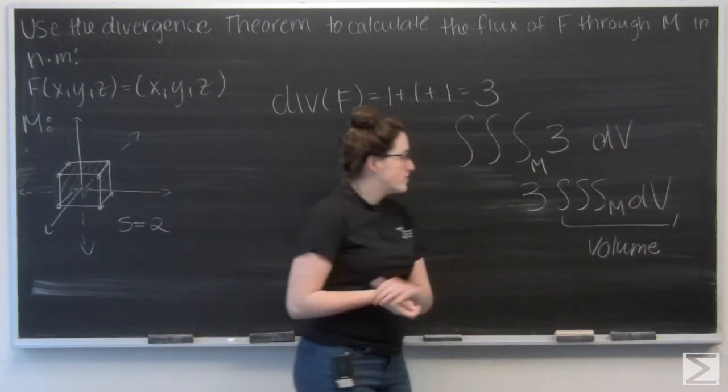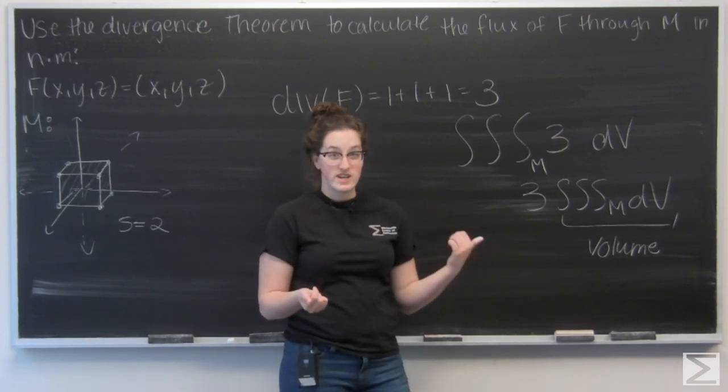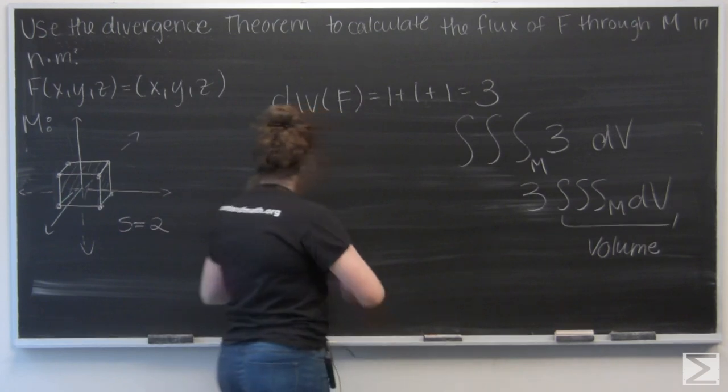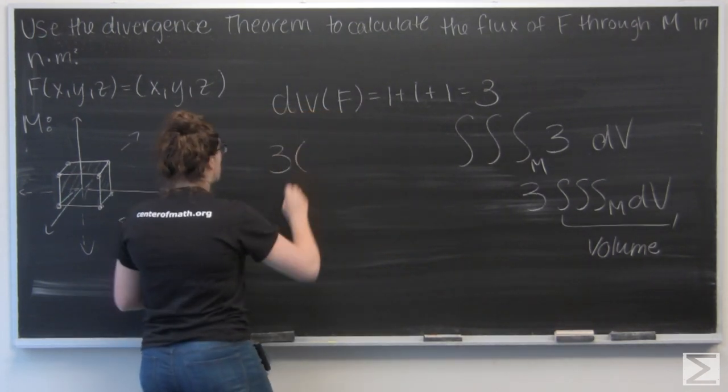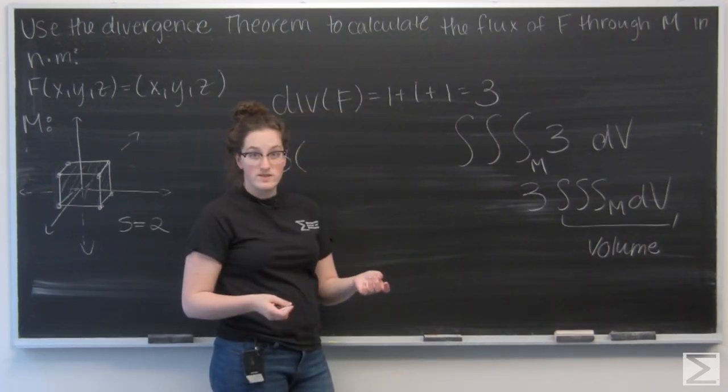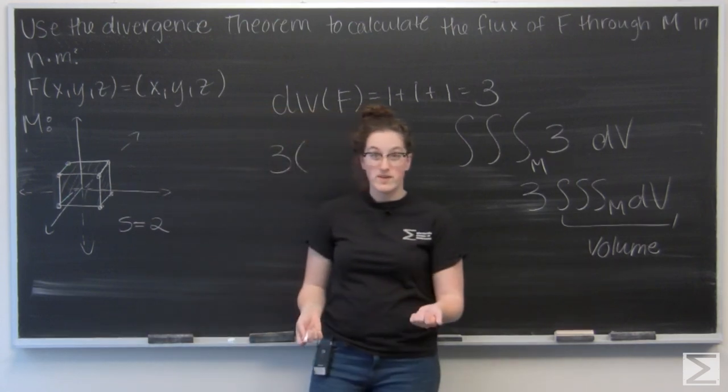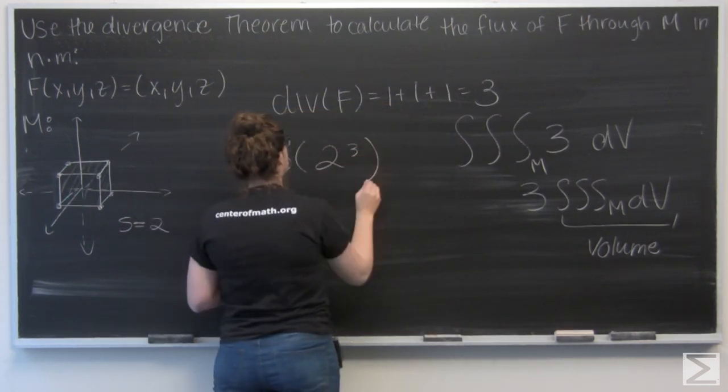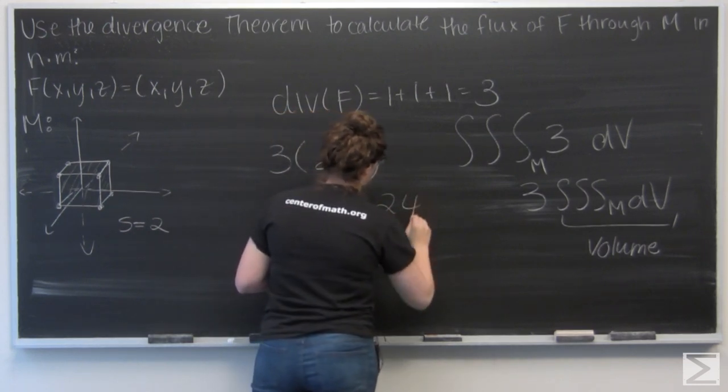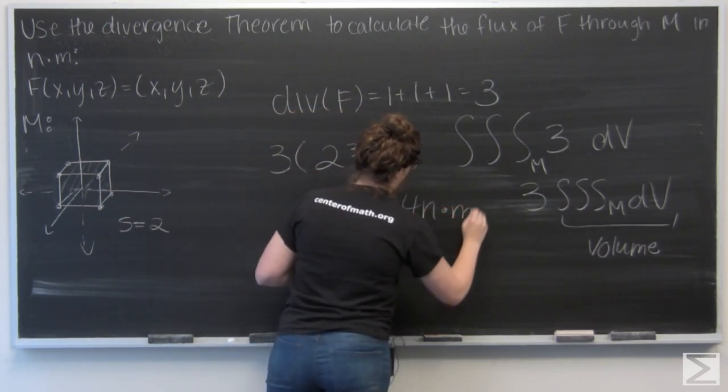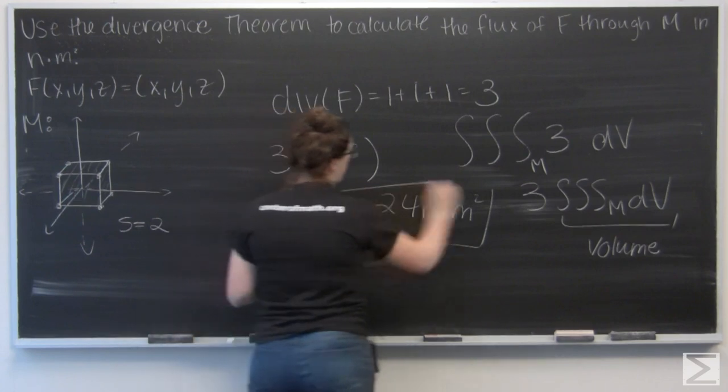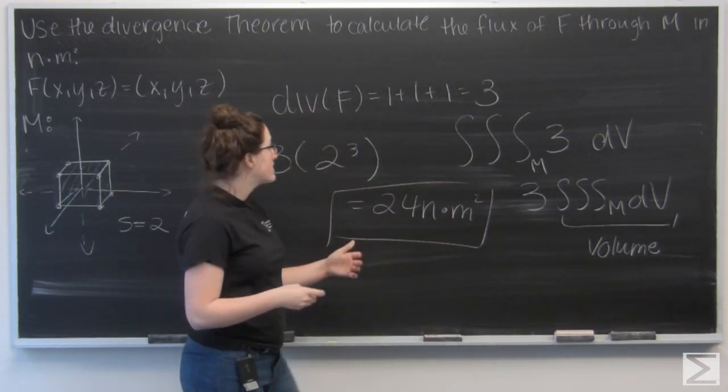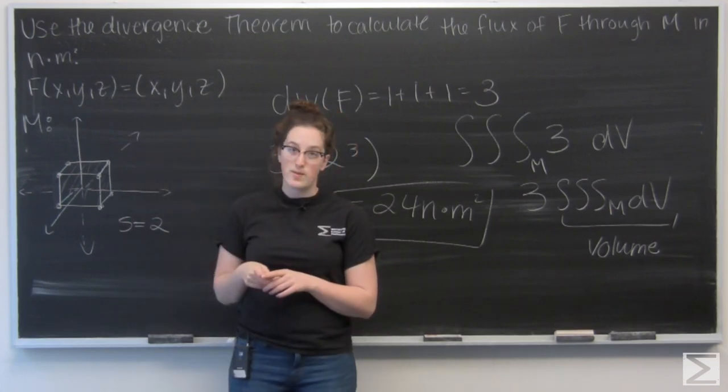Since I have a formula for the volume of a cube, I don't actually need to calculate any integration here. The volume of a cube is side cubed, and here I'm given that my side length is 2. So I've got 3 times 2 cubed, which gives me 24 Newton meters squared. That's the flux of this vector field F through our cube M.